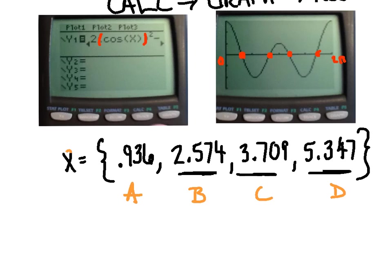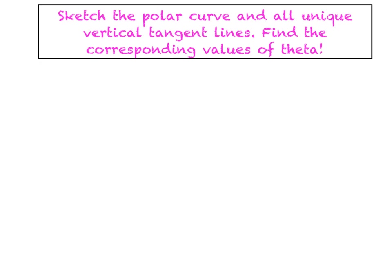Good catch. Those shouldn't be x equals. That should be theta equals. Those are where the horizontal tangent lines occur. All right. We're going to switch gears here. We're going to start to talk about a vertical tangent line. And the curve I want you to consider is r equals 2 plus 2 cosine.